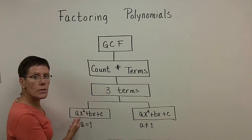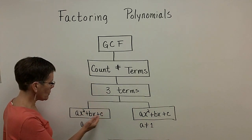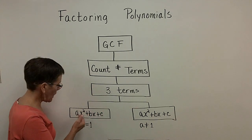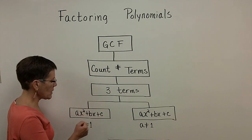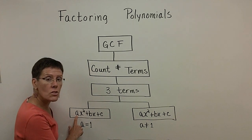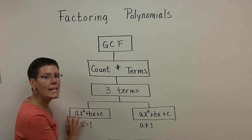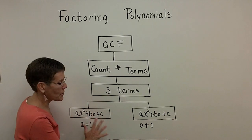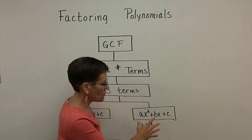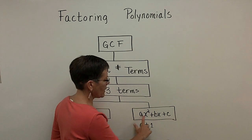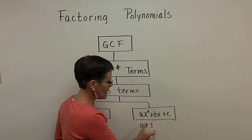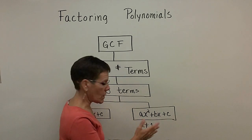The easier scenario is a trinomial of the form x squared plus something x plus a constant — or ax squared plus bx plus c — where the coefficient in front of the x squared term is always equal to one. A few segments from now, we're going to look at factoring trinomials where that coefficient is not equal to one, which is a little bit more challenging.